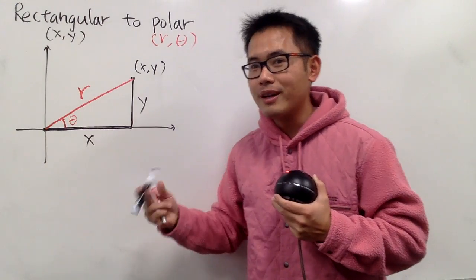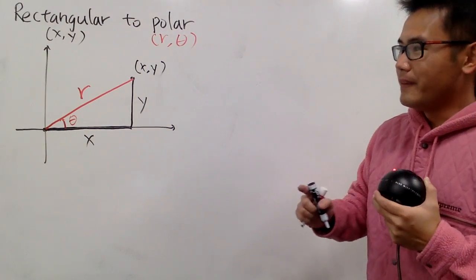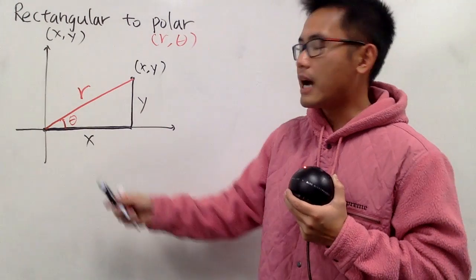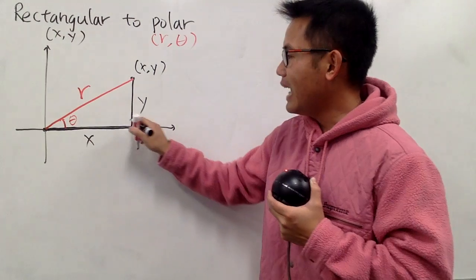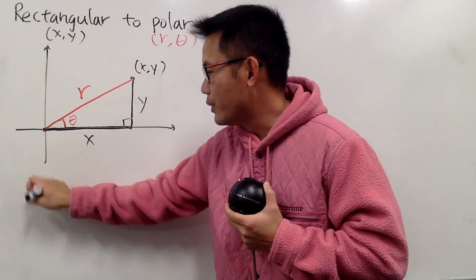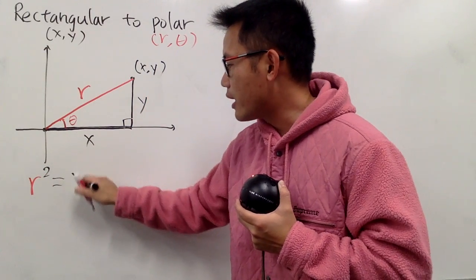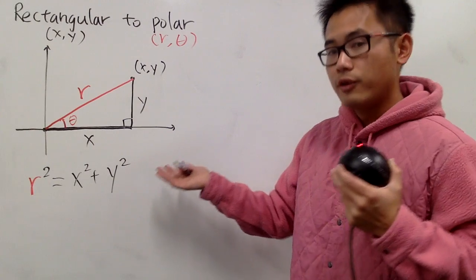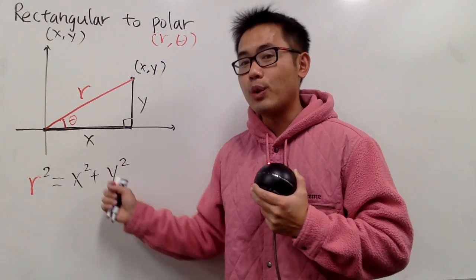In my opinion, theta is more important, because you should be able to see what's in front of you before you move forward. We are going to come up with a relationship for r and also for theta, based on x and y. Let's do r first. We have a right triangle, and we can just use the Pythagorean theorem. So r squared equals x squared plus y squared. I'm not going to take the square root on both sides, because this is the form we are going to use.